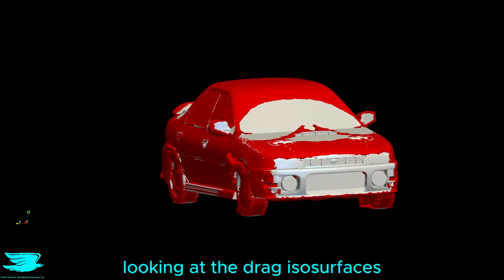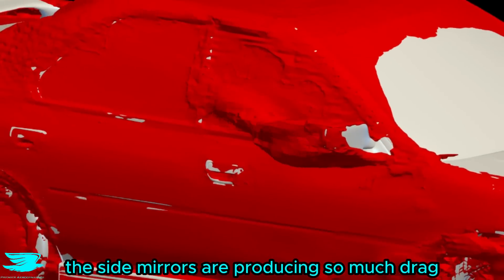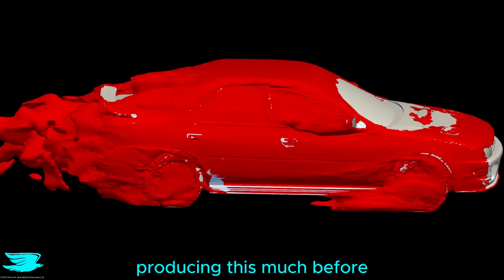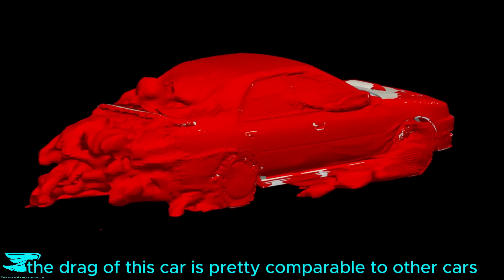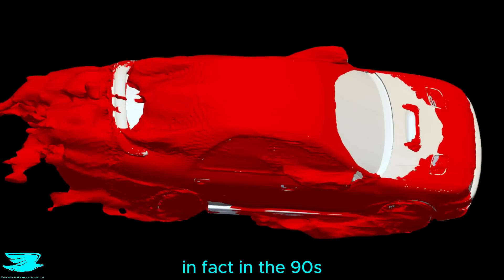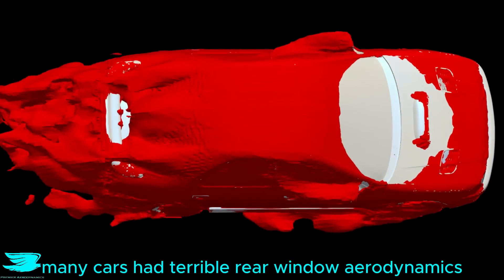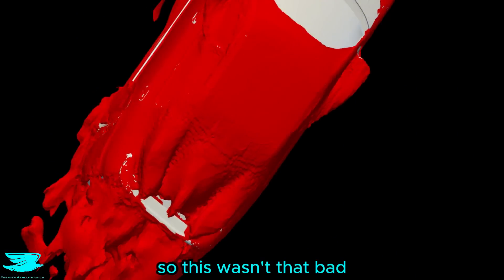Looking at the drag isosurfaces, the side mirrors are producing so much drag. I don't remember ever seeing side mirrors producing this much before. And apart from the rear window, the drag of this car is pretty comparable to other cars. In fact, in the 90s, many cars had terrible rear window aerodynamics. So this wasn't that bad.